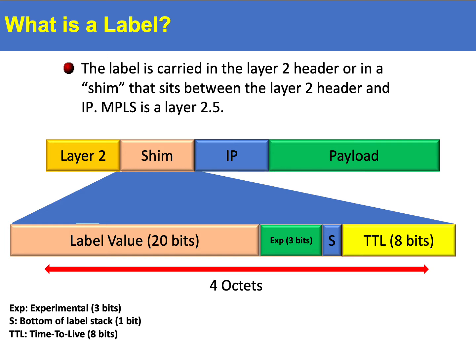The label is referred to as a shim and comprises 32 bits. The first 20 bits are used to uniquely number the label. As will be shown, this has no end-to-end significance.